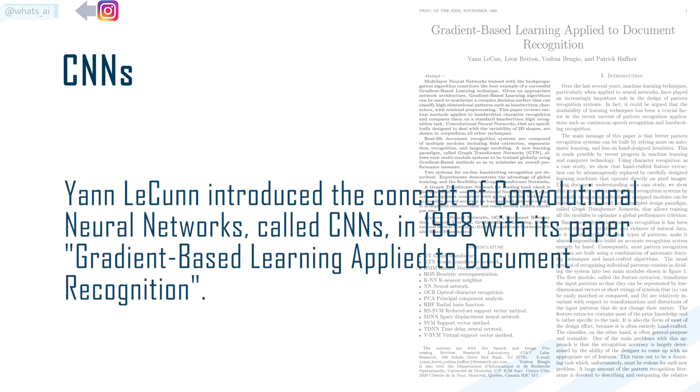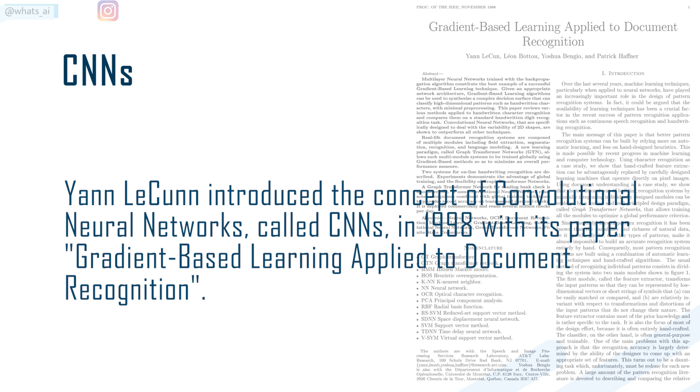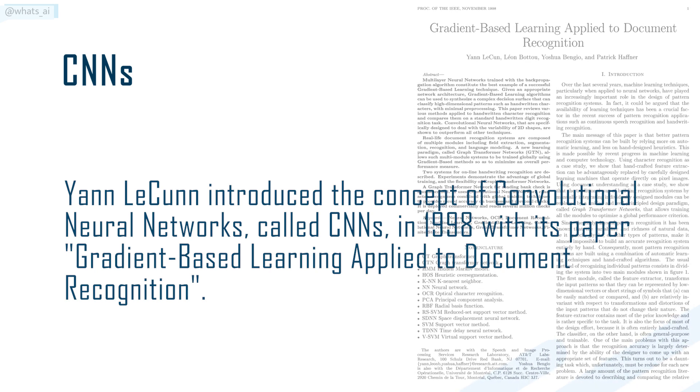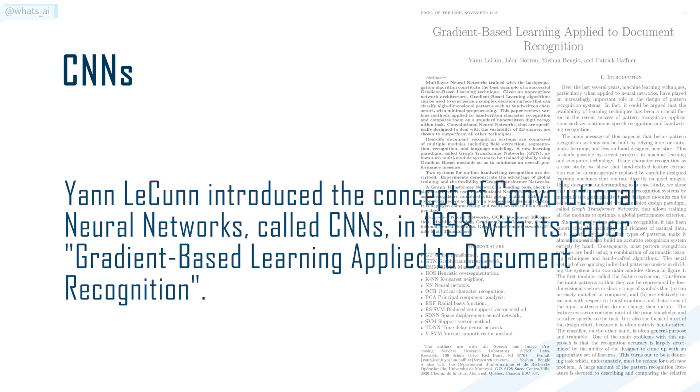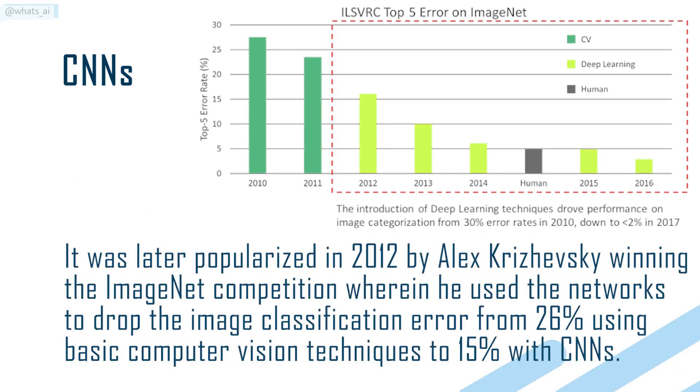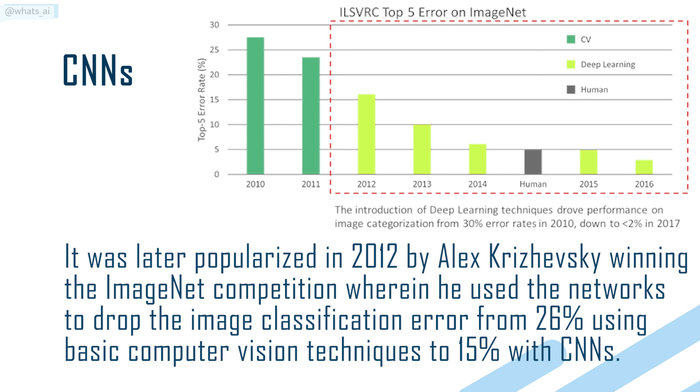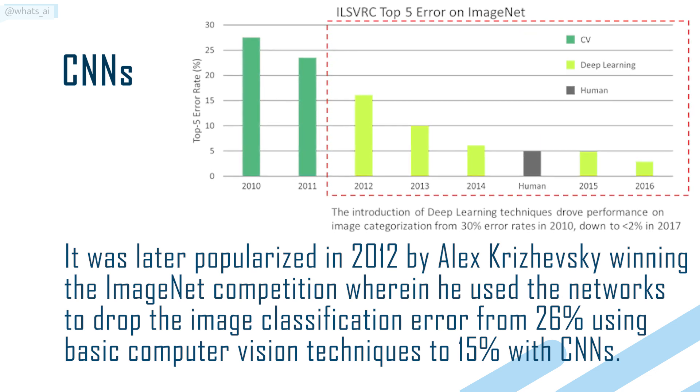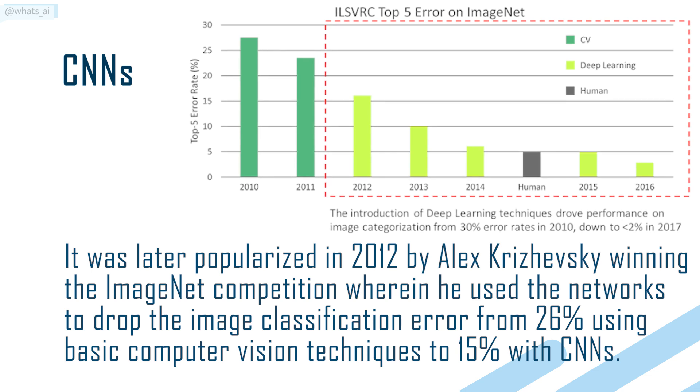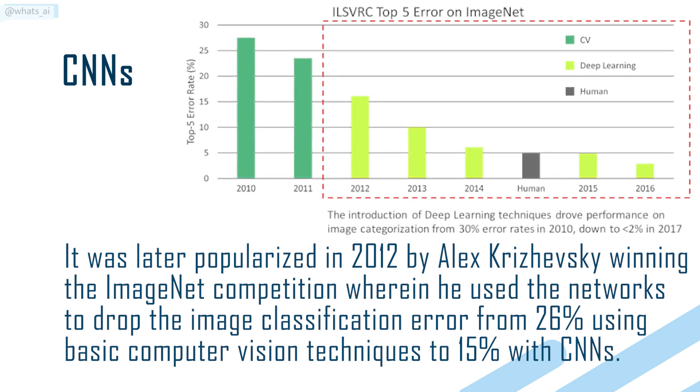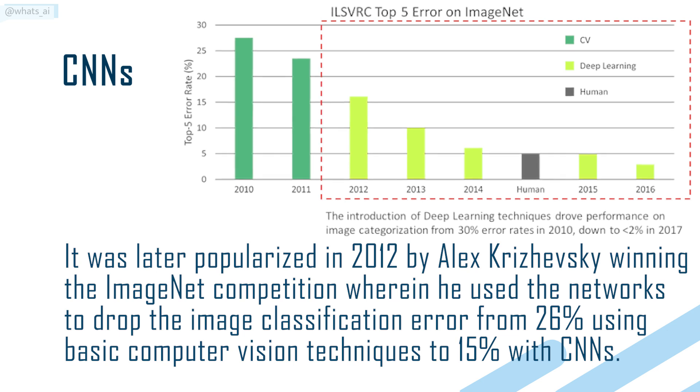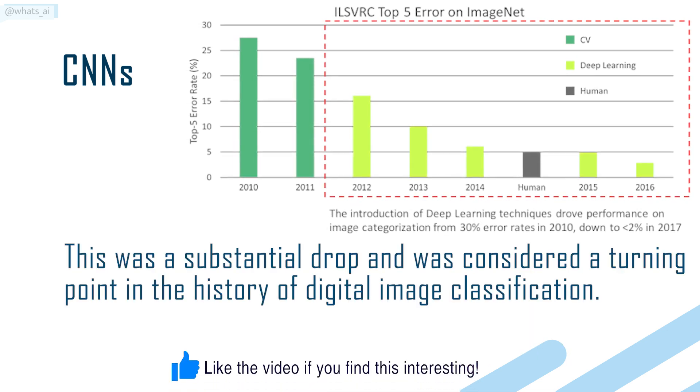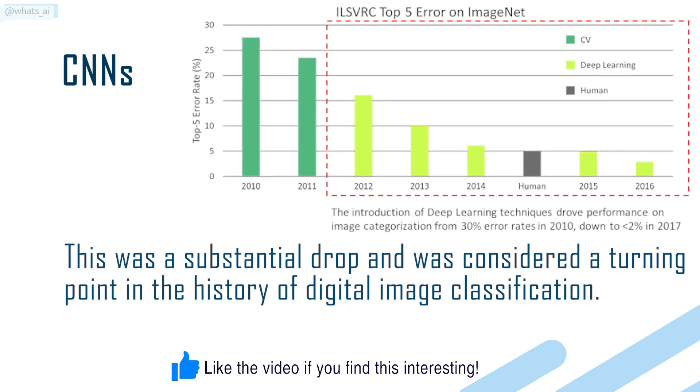Jan LeCun introduced the concept of neural networks, called CNNs, in 1998, with the paper Gradient-based Learning Applied to Document Recognition. It was later popularized in 2012 by Alex Krizhevsky, winning the ImageNet competition wherein he used the networks to drop the image classification error from 26%, using basic computer vision techniques to 15% with CNNs. This was a substantial drop and was considered a turning point in the history of digital image classification.